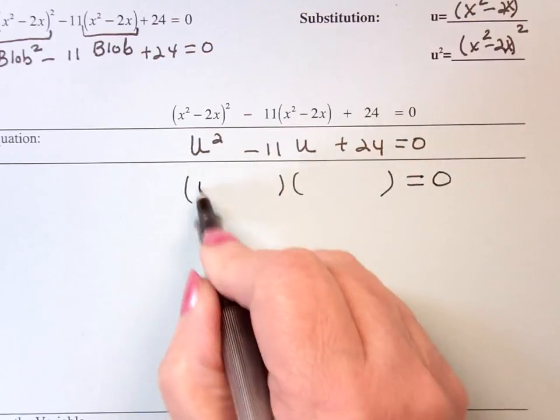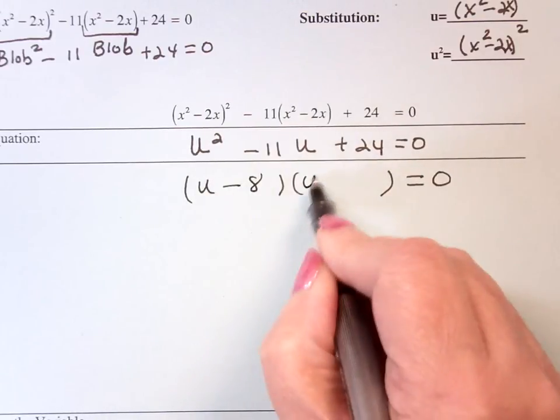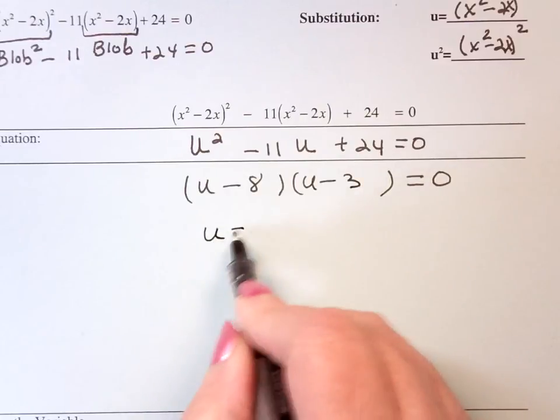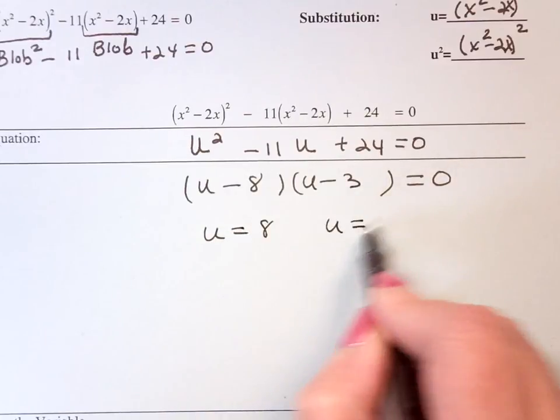So this is u minus 8, u minus 3 equals 0, so that u is 8, u is 3.